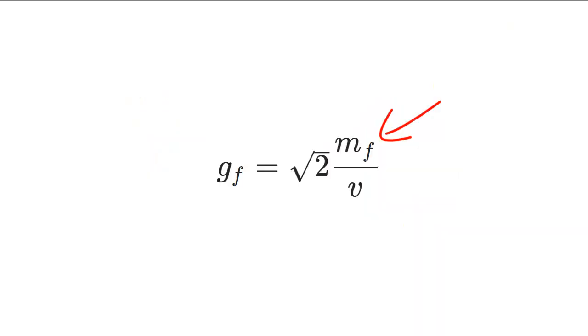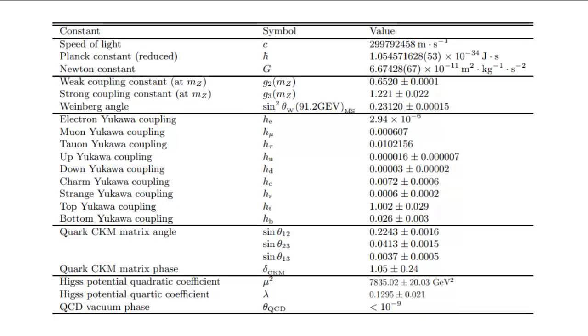These masses are calculated through their coupling constants and the vacuum expectation value of the Higgs field. The Higgs potential quadratic and quartic coefficients are related to the Higgs mass and the vacuum expectation value of the Higgs field. At least one dimensional constant with units of mass, or energy equivalently, must be introduced in quantum field theory apart from C and H, to explain all masses of fundamental particles.